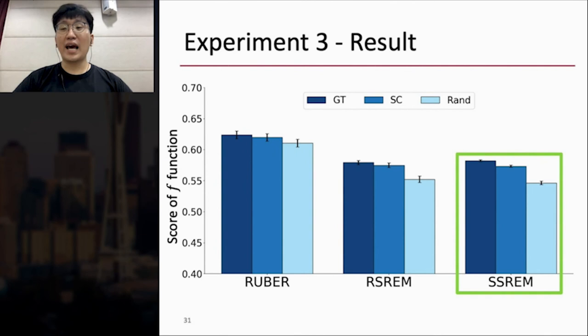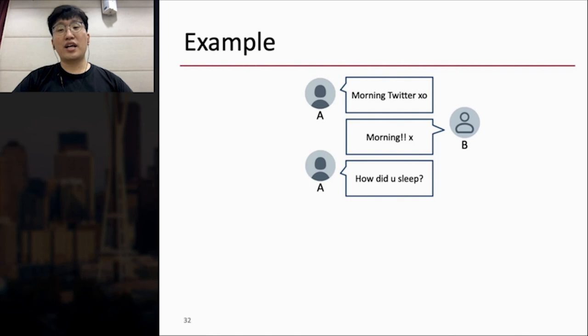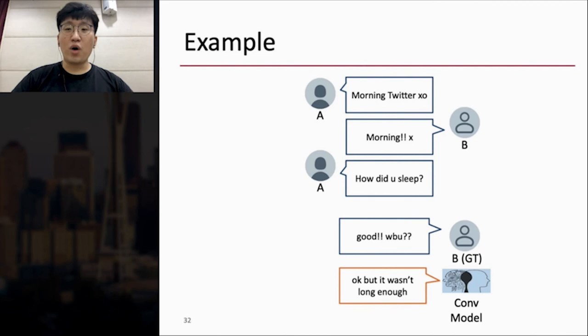And I show one example of conversation and generated responses with SSREM score. In the conversation, speakers said, morning Twitter, morning, how did you sleep? Then the ground truth of the conversation is, good, what about you? And the generated response by one conversation model is, okay, but it wasn't long enough. Then it is an appropriate response for the context. But unlike BLEU that gives zero scores, SSREM gives a high score to this appropriate response.